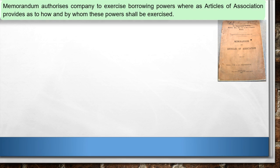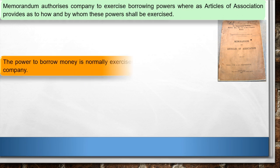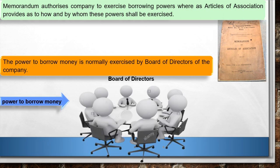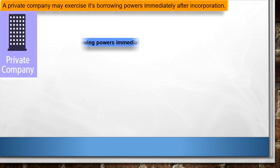Company को borrow करने के powers company के Memorandum में दिये होते हैं. Articles of Association में, ये power का उपयोग कैसे और किसके द्वारा किया जाएगा ये लिखा होता है. Borrow money करने के लिए power company ने Board of Directors को दिया है.